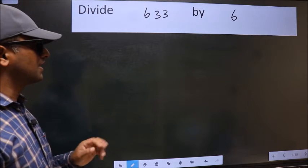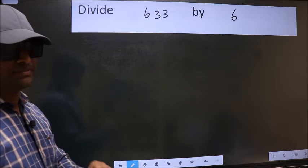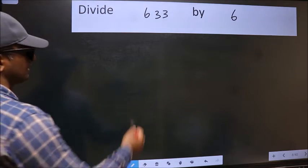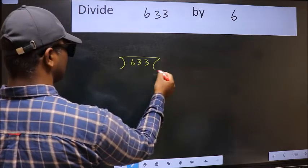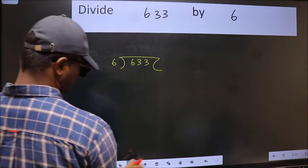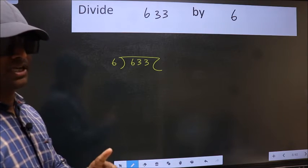Divide 633 by 6. To do this division, we should frame it in this way. 633 here and 6 here. This is your step 1.